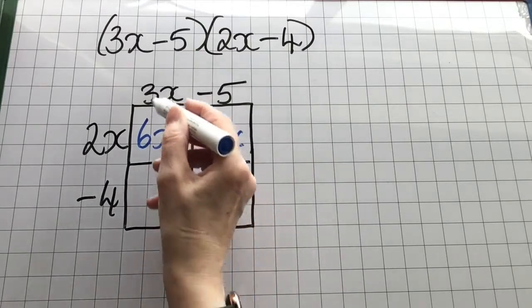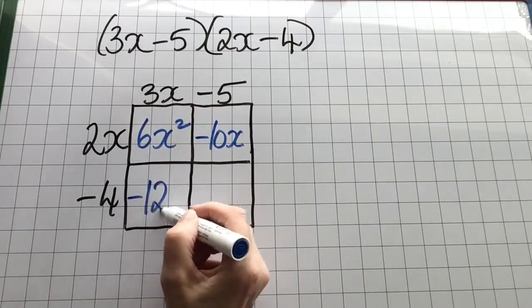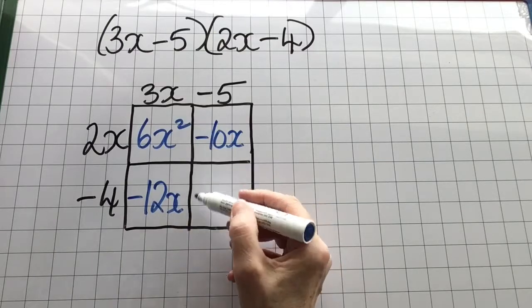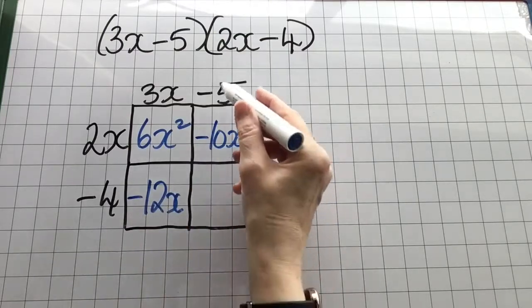Minus 4 by 3x is minus 12x. And minus 4 by minus 5 is plus 20.